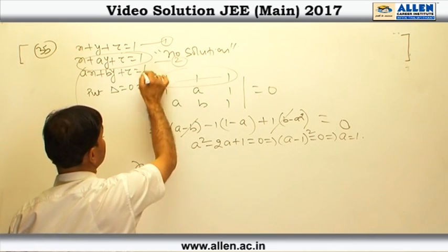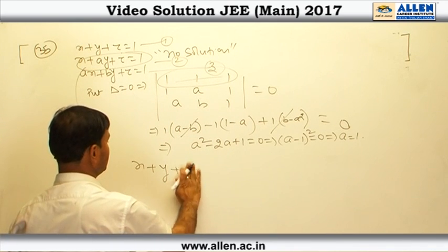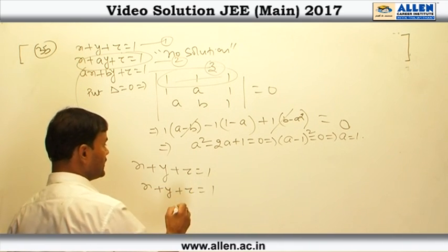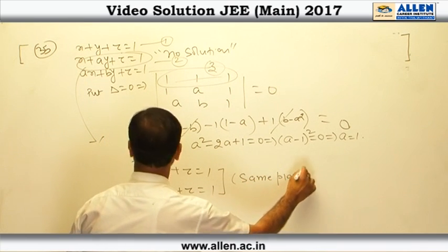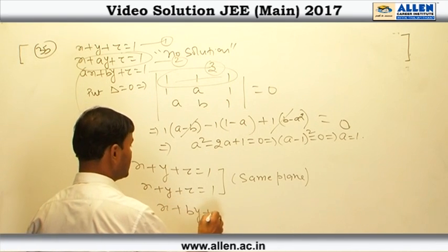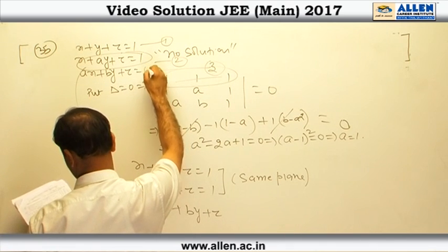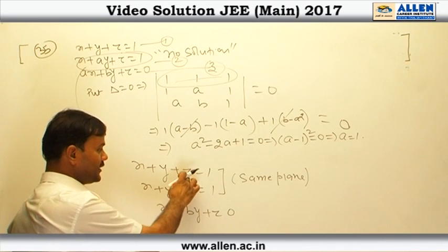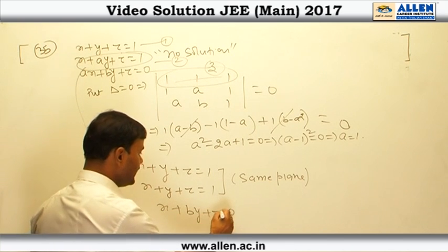For a equal 1, the first and second equations are the same, both representing the same plane. For a equal 1, our third equation becomes x plus by plus z equals 0. These two equations are the same and the third equation is x plus by plus z equal to 0.